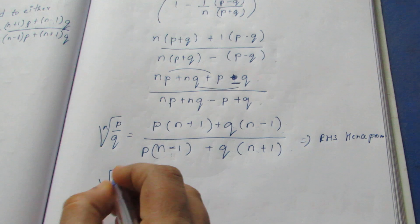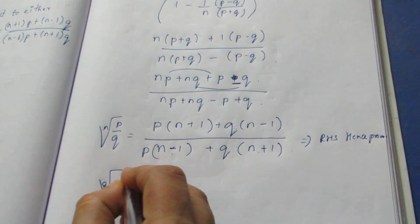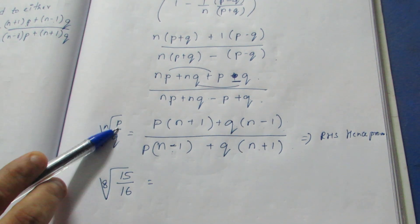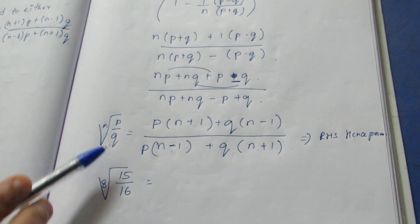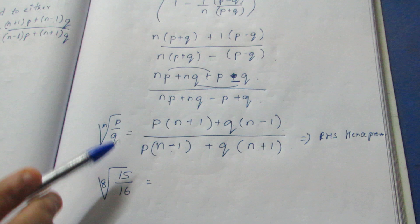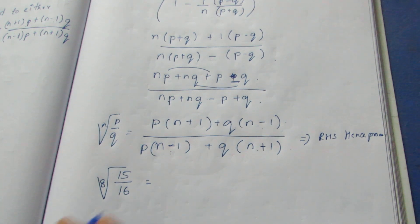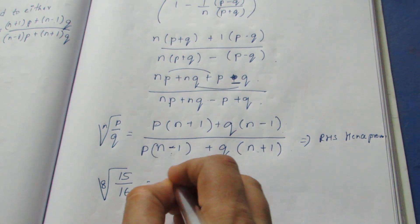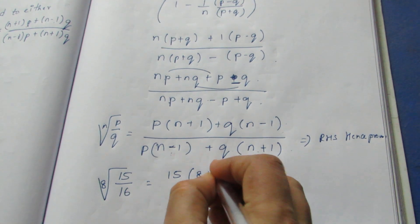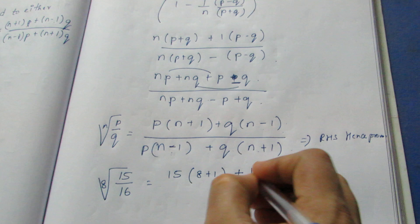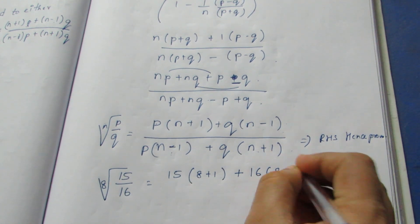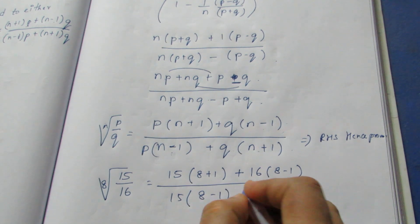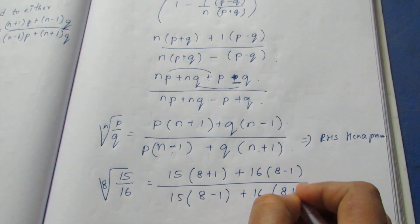Next, we will find the 8th root of 15 by 16. So the 8th root of 15 by 16 — n is 8, p is 15, q is 16. We substitute into the formula: numerator is (n plus 1) into p plus (n minus 1) into q, which is 9 into 15 plus 7 into 16; denominator is 7 into 15 plus 9 into 16.